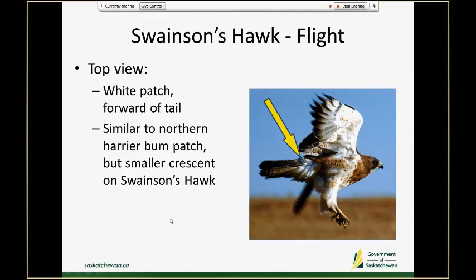Something I also find useful for Swainson's hawks, especially if they're in the distance or the lighting is tough, is that they have a patch of white forward of the tail on the back — not too different from what you would see on a Northern Harrier. Northern Harriers have a very large square of white contrasting against the rest of the body just forward of the tail, and Swainson's does something similar except it's more of a small thin white crescent, but it's distinctive and useful if they're flying away from you.